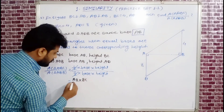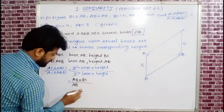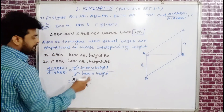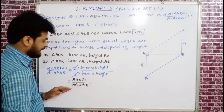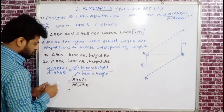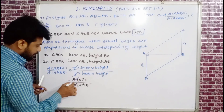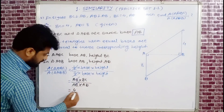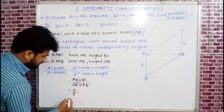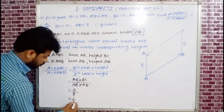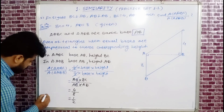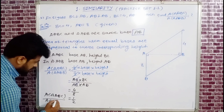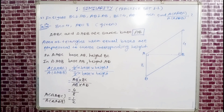After cancellation, the ratio becomes BC / AD. Substituting: BC = 4 and AD = 8. So the ratio of area of triangle ABC to area of triangle ADB = 4/8 = 1/2.